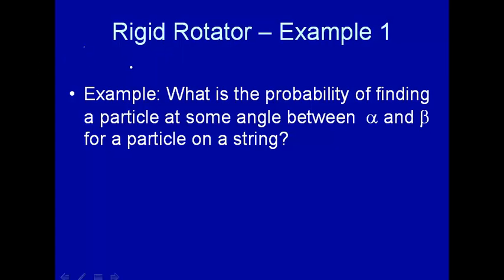Let's do some examples using rigid rotator particle on a string, a particle rotating in two dimensions. Here's an example. What is the probability of finding a particle at some angle between alpha and beta for a particle on a string?